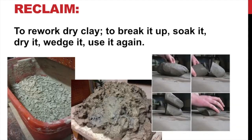Reclaiming means we take old unfired clay — even if it's very dry — break it up, put it in water to dissolve, mix it with our hands, then pull it out onto a plaster slab to dry. Once partially dried, we wedge and knead it, cut it open to check for air bubbles, and use it again. So if you have dry clay, you can reuse it — just get it wet, soften it up, and wedge it.